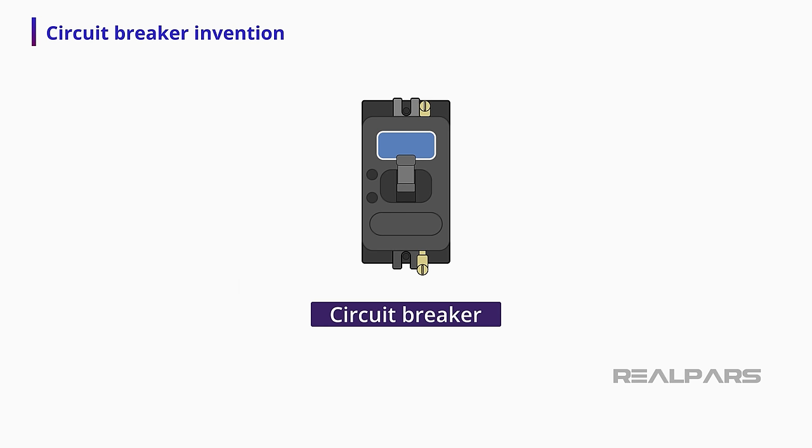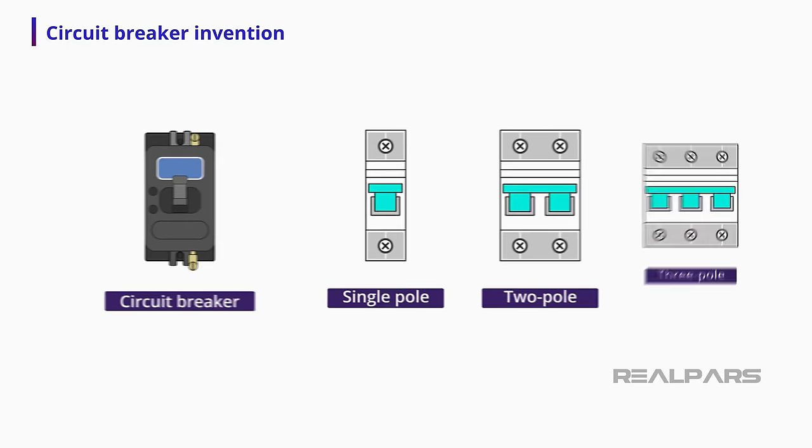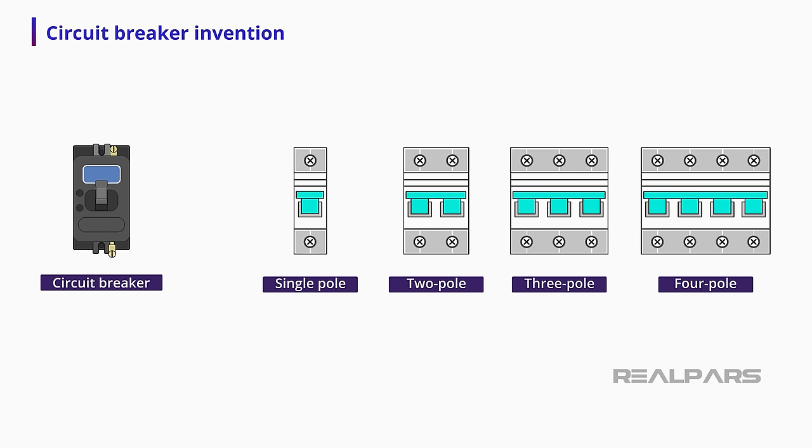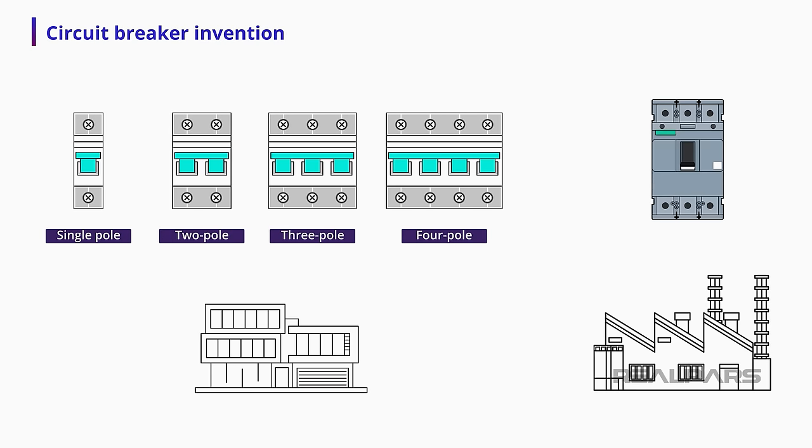Since then, companies have continually developed this technology, and today, there are several models of circuit breakers, such as the single-pole, two-pole, three-pole, and even the four-pole circuit breaker. They are used in many types and sizes for use in different applications, from residential to large industrial systems.